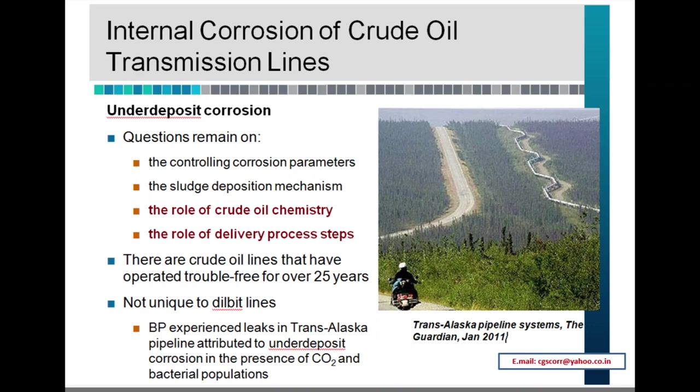Under-deposit corrosion testing: the developed methodology enables assessment of inhibitor performance. Remaining challenges are variable and dynamic sludge properties, uncertainty about the controlling corrosion mechanism (bacterial, aqueous, or a combination), and long-term exposure experiments. Internal corrosion of crude oil transmission lines: unanswered questions include the controlling corrosion parameters, the sludge deposition mechanism, the role of crude oil chemistry, and the delivery process. Some crude oil lines have operated trouble-free for over 25 years — not unique to dilbit (diluted bitumen) lines. BP experienced leaks in the Trans-Alaska Pipeline attributed to under-deposit corrosion in the presence of CO₂ and bacterial populations.